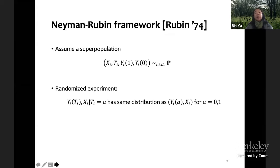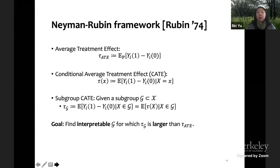This is just some basic notation for the Neyman-Rubin framework. We assume a superpopulation and we have an IID observation, both the covariates and randomization mechanism and the two potential outcomes. Traditionally, people are interested in average treatment effect, which is called tau, and recent work has been concentrating on conditional average treatment effect as a way to deal with heterogeneous treatment effect.